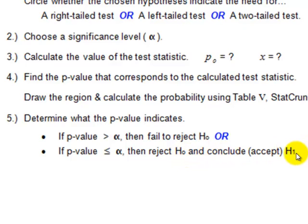So we have a saying for remembering this: if the P value is low, H of 0 must go. P value being low means when it's less than or equal to alpha, that's when we reject H0. H0 must go and we conclude H1.